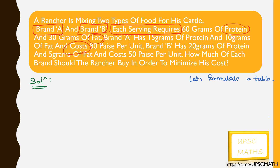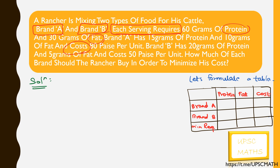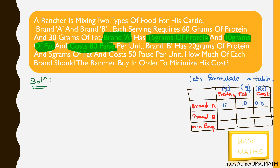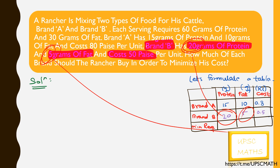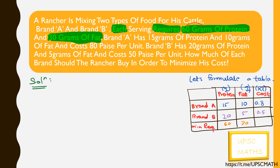Let's formulate a table for the objective function and constraints, with Brand A, Brand B, and minimum requirement on one axis, and protein, fat, and cost on the other. Brand A has 15 grams of protein and 10 grams of fat and costs 80 paise per unit. Brand B has 20 grams of protein and 5 grams of fat and costs 50 paise per unit. The minimum requirement is 60 grams of protein and 30 grams of fat.